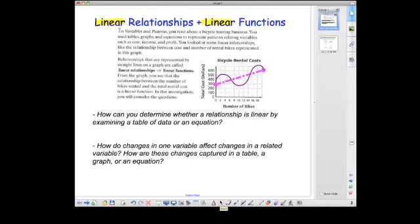We've moved on to the Moving Straight Ahead textbook. In variables and patterns, we read about the bicycle touring business. We had lots of examples about bike touring and we looked at tables and graphs and equations to represent certain variables. The relationship between variables that's represented by a straight line in a graph is called a linear relationship. This is a great definition to have in your notes, or a linear function. A function is just another word for an equation.